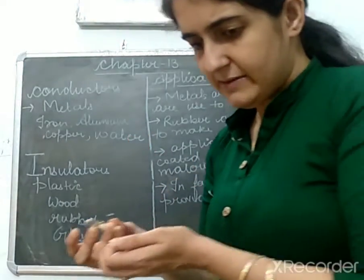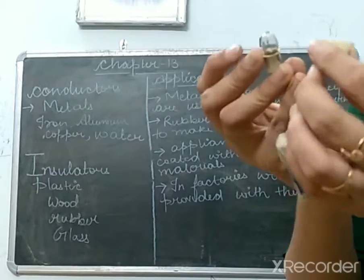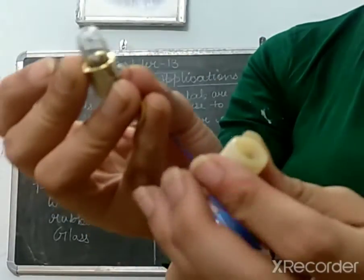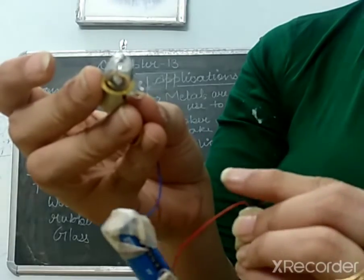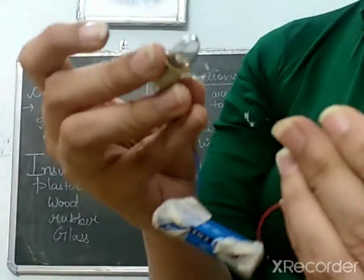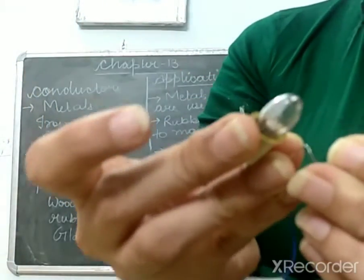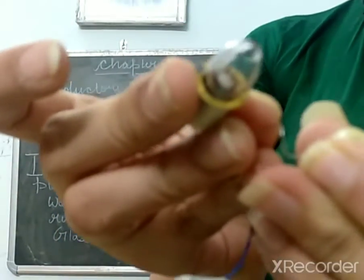But if I replace this, if I join this plastic with this wire, if I join this red wire with this wire, does the bulb glow?